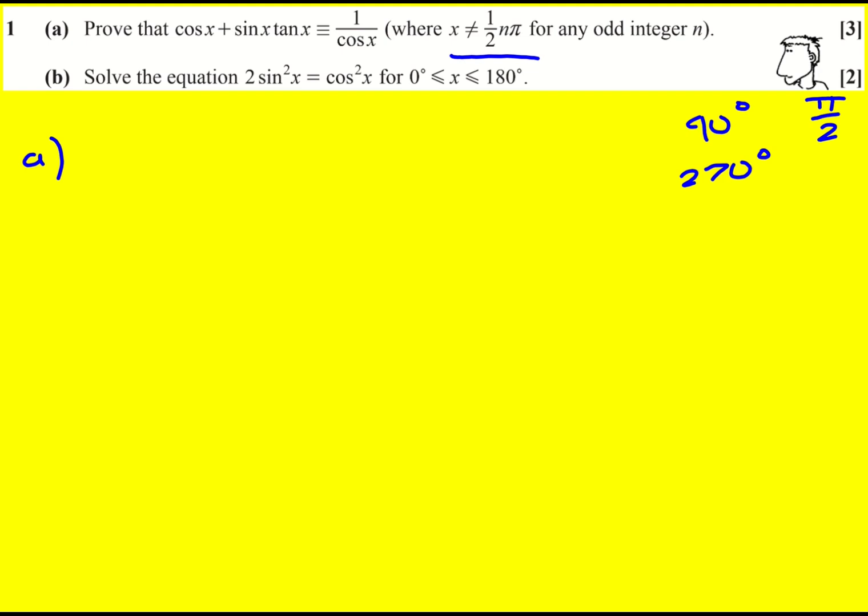For our case we don't have to worry about it too much, but I feel like it could be confusing when you first see it, especially when it starts bringing pi's into it. Right, well let's look at the left-hand side. That's the one that I think we can combine to get the right-hand side. So it's going to be cos x plus sin x times tan x, which I'm going to write as sin x over cos x.